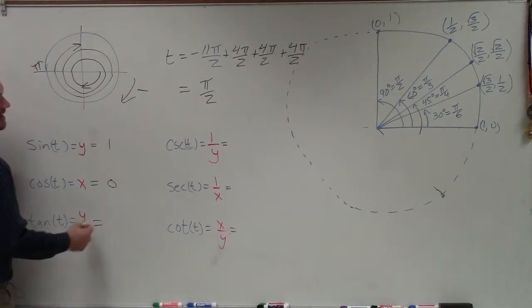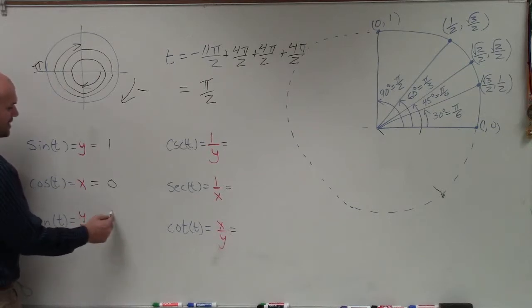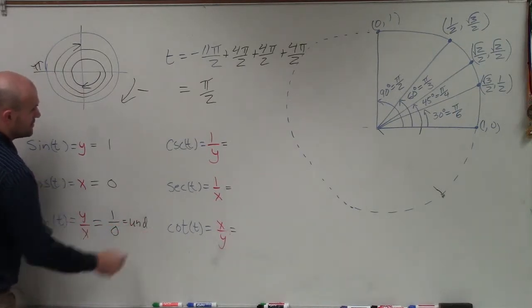Cosine is going to be 0. And tangent is y over x, which is 1 over 0, which equals undefined.